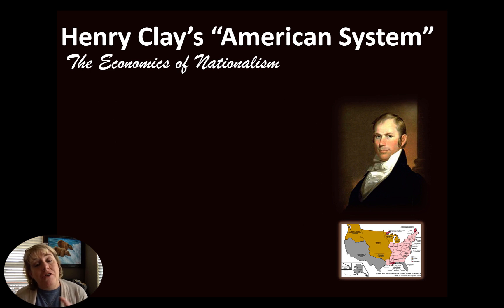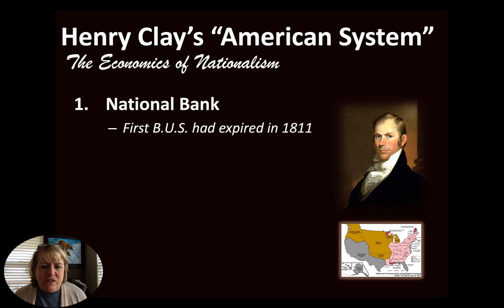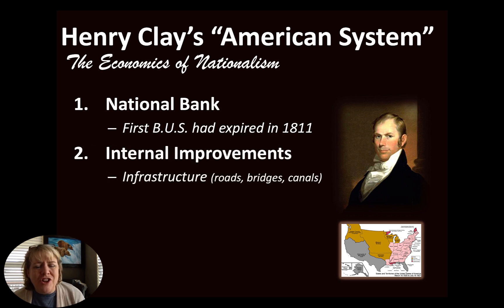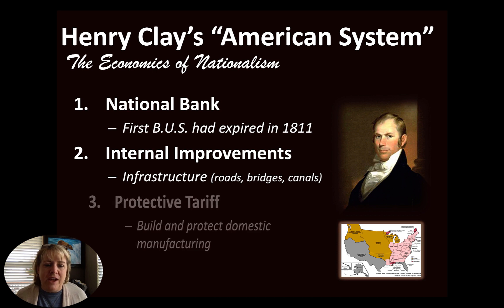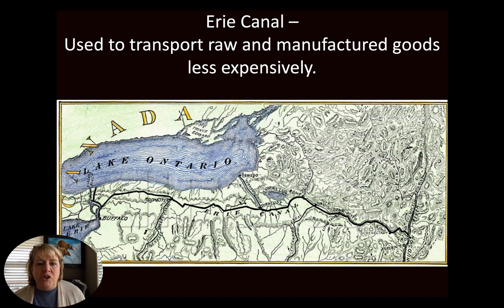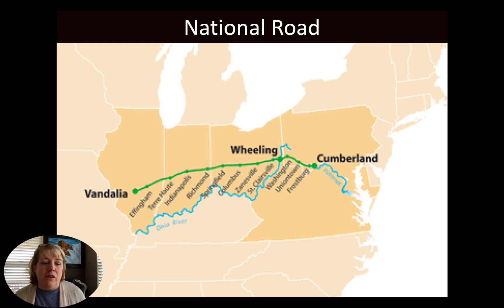Henry Clay's American System under James Monroe is a little bit different. We still have the National Bank, signed in for a 20-year commitment just like the first one. Internal improvements are still on the table — just because Madison vetoed them, they're still trying to build trade throughout the Western states. And the protective tariff is still in action. When it came to Monroe's presidency, he basically approves all three. The Erie Canal is going to be built under Monroe's American System — a man-made canal connecting the Great Lakes to New York, used to transport raw materials and manufactured goods much cheaper and much faster. On top of that, a National Road is going to be built from Cumberland, Maryland all the way to Vandalia, Illinois — known as the Cumberland Road or the National Road.